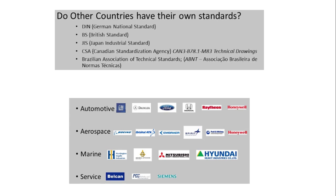Other countries also have their own standards: Germany follows DIN, Britain follows BS, Japan follows JIS (Japan Industrial Standard), Canada follows CSA, and Brazil follows ABNT. Some companies follow their own standards — for example, automotive companies like GM, Daimler, and Honda; aerospace companies like Boeing, ATK, Embraer, Spirit, and UTC Aerospace; and industrial companies like Mitsubishi, Hyundai, and Siemens.